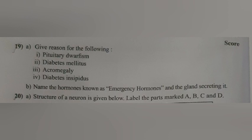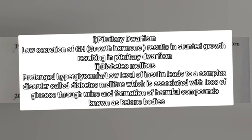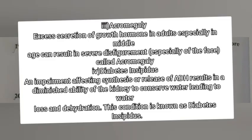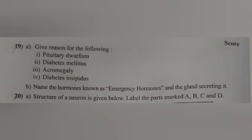Question 19A. Give reason for the following. 1. Pituitary dwarfism: Low secretion of GH (growth hormone) results in stunted growth, resulting in pituitary dwarfism. 2. Diabetes mellitus: Prolonged hyperglycemia and lower level of insulin leads to a complex disorder called diabetes mellitus, which is associated with loss of glucose through urine and formation of harmful compounds known as ketone bodies.